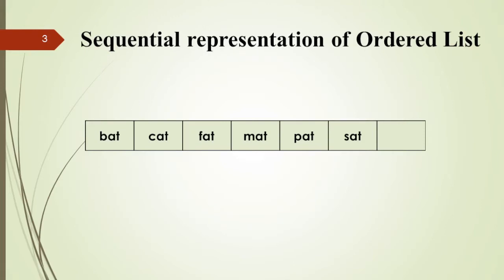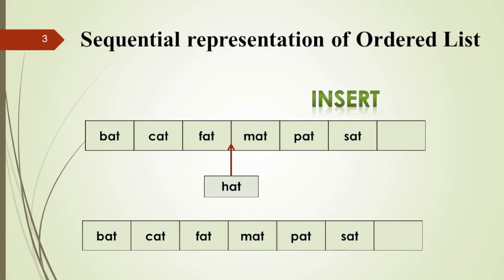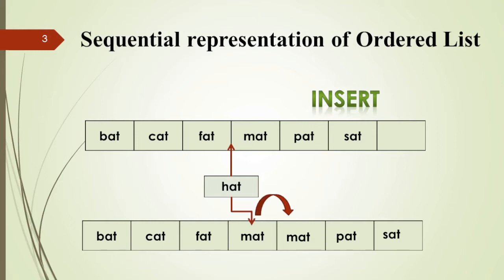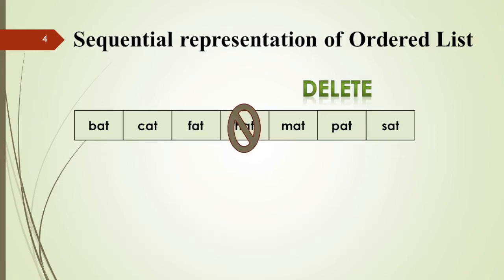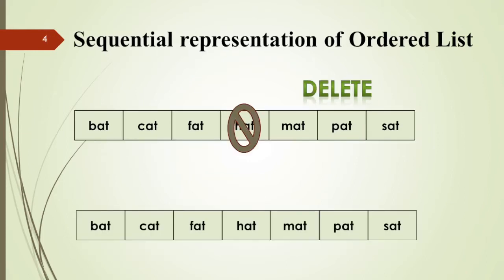As an example of sequential representation of an ordered list: if I want to insert 'hat' in between, I have to shift the data items 'mat', 'pat', and 'sat' to the right. Once that shift is finished, I can put 'hat' in the place of 'mat'.